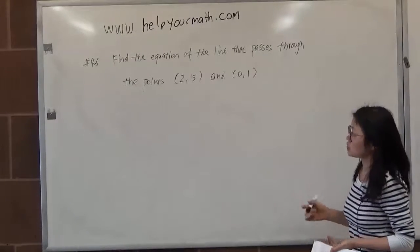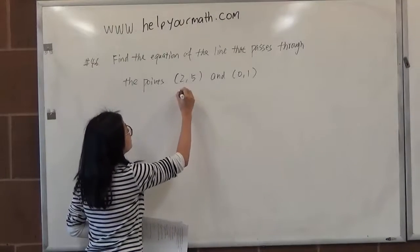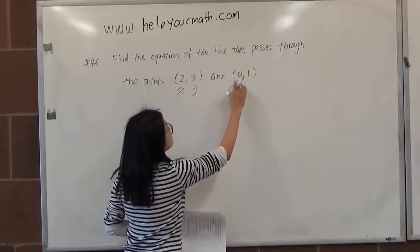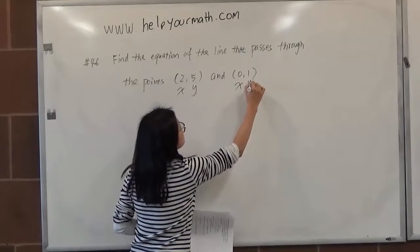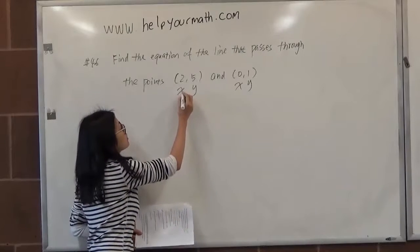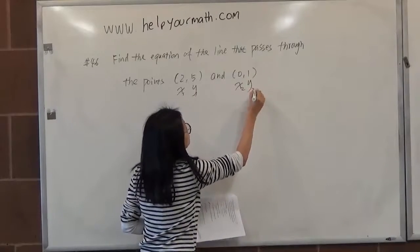So we have two points here. Always when we see two points, a point always has an x value and y value. So this is x and y, x and y. Since we have two points, we can label them saying this is the first point, therefore this is x1, y1, x2, y2.